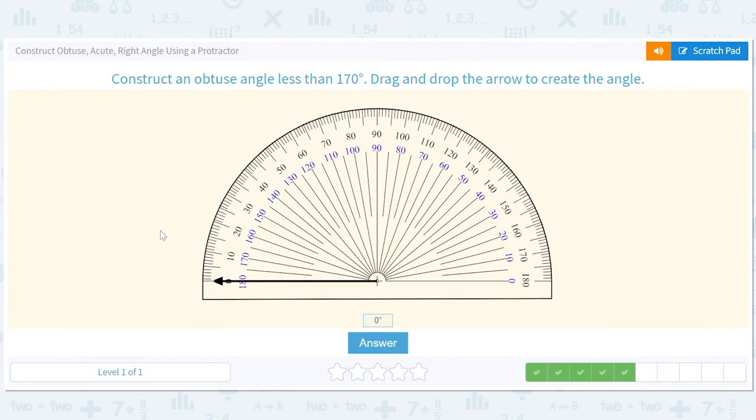Construct an obtuse angle less than 170 degrees. The only ones that wouldn't be okay would be these and anything that's acute or right. So we can do any of these. Let's do 120. That's obtuse, less than 170, and it's 40 times three.